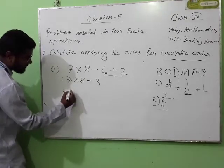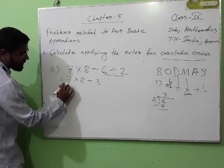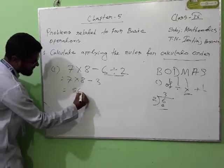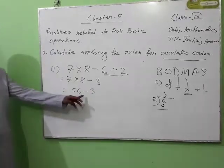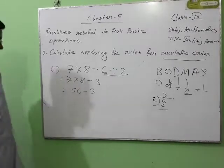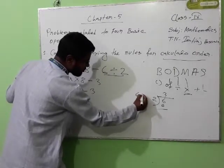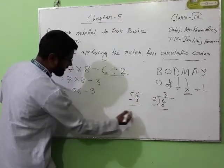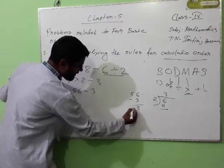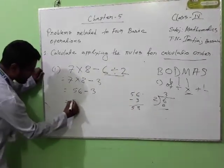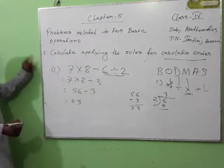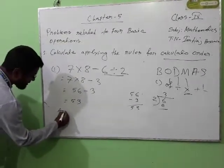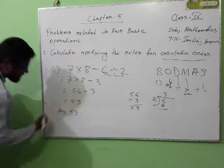Seven eights are fifty-six, minus three. Now there is only one operation. We know how to do it. Fifty-six minus three equals fifty-three. So the answer is fifty-three.